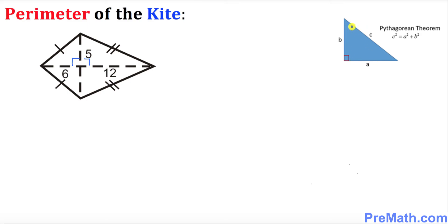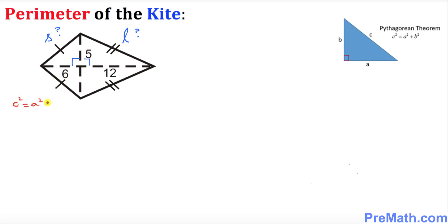I'm going to call the smaller side 's' and the longer side 'l'. Now we're going to find the length of these sides using the Pythagorean theorem. Let's find the value of s first. We have c squared equals a squared plus b squared. I'll call one leg 'a', the other 'b', and the hypotenuse 'c'. This is a right triangle.